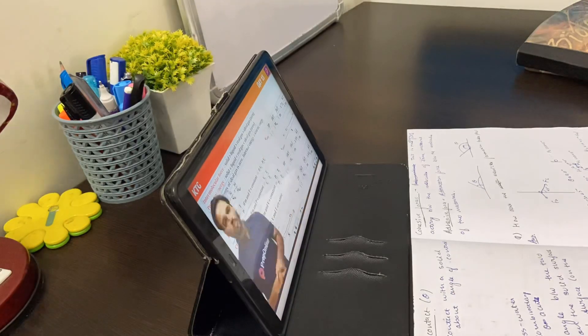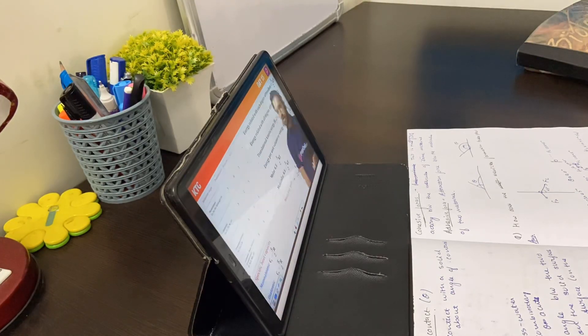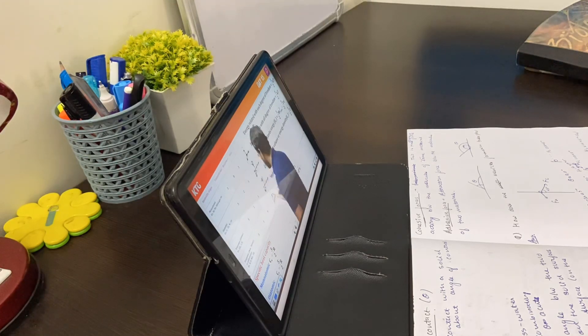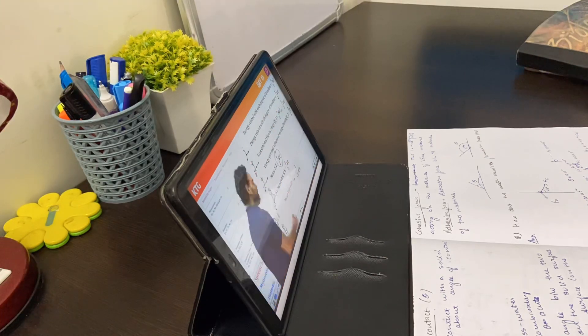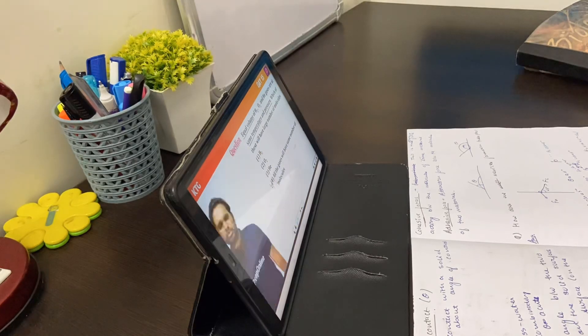So while scrolling through the prep online app, I found a crash course called 'the most wanted' in which you can complete your syllabus in 45 days. And the classes are only for like 3 to 4 hours, so you can actually devote more time to your self-study. So if you're a 2021 aspirant or a dropper, definitely check this out.